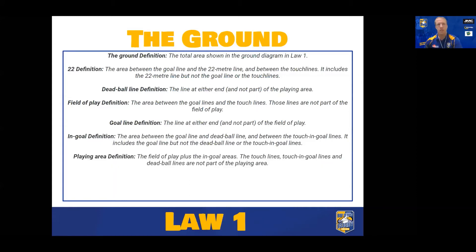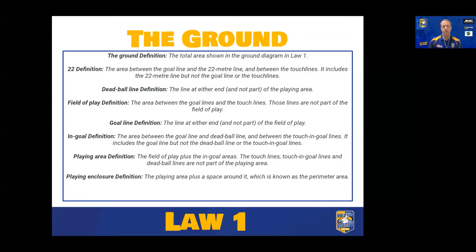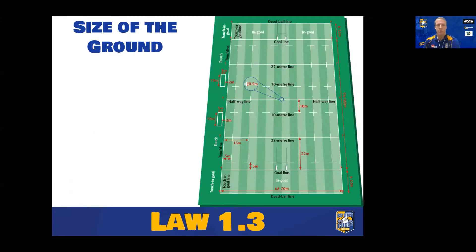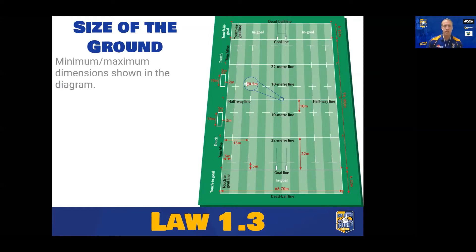The playing area is the field of play plus the end goal areas. The playing enclosure also refers to the space around the playing area. And the touch-in-goal area is the area beyond the touch-in-goal lines alongside the end goal area. Here we can see the diagram referred to in the previous definitions — it shows the ground with all the measurements.